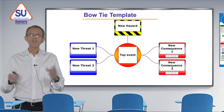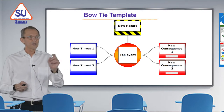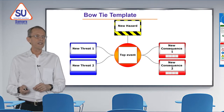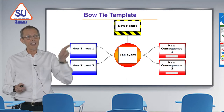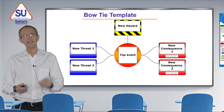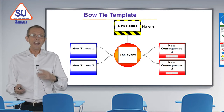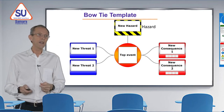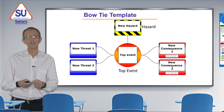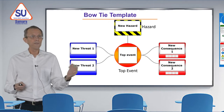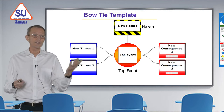First we'll introduce the bowtie and what it is. On the screen here we have a hazard at the top in the hazard hatching in that box. The hazard can be anything, and as a result of the hazard something harmful could happen — we'll call that the top event. It could be harmful to people, harmful to property, or harmful to reputation.